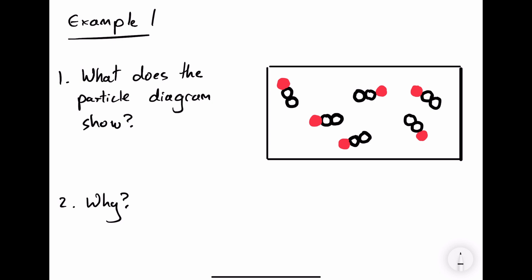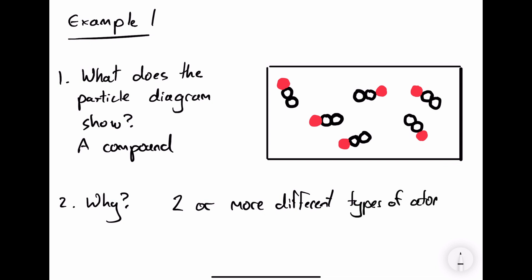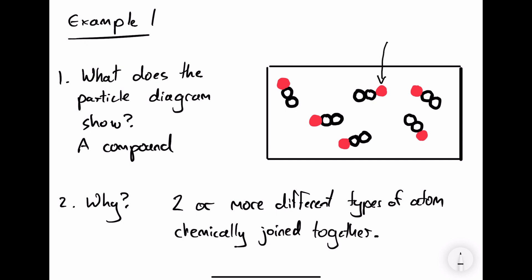Let's take a look at the first example of a particle diagram. What does the particle diagram show? This particle diagram shows a compound, because it's made of two or more different kinds of atom chemically joined together, and it's in a fixed ratio. You can see that for every one red atom we have two of the white atoms. Now remember, in real life atoms don't have a colour — it's only when you have lots of atoms together that you see these properties.